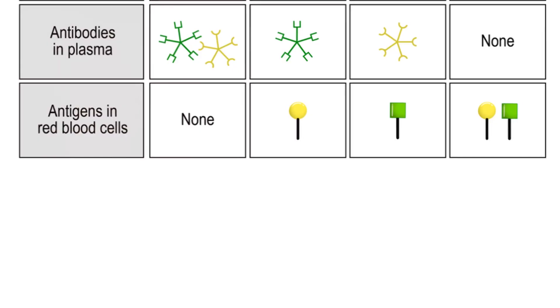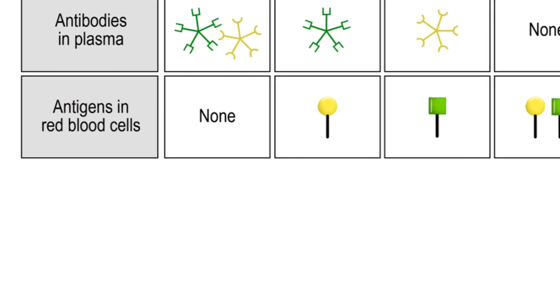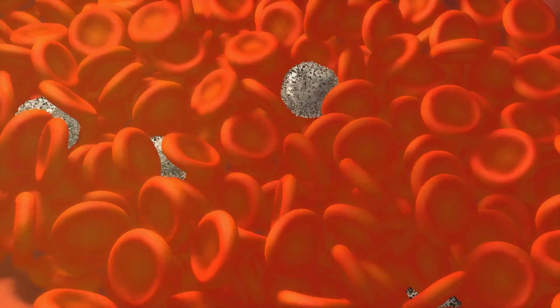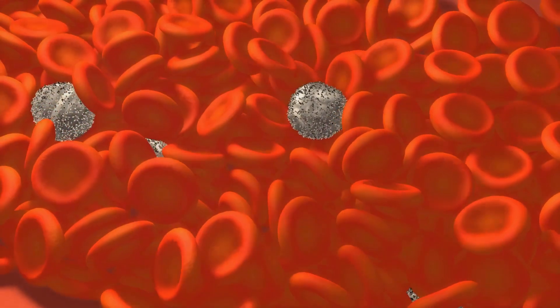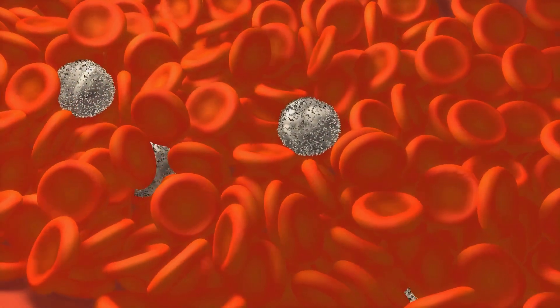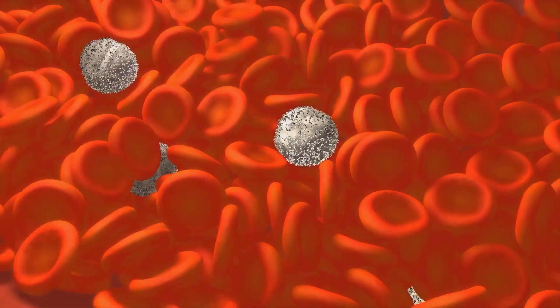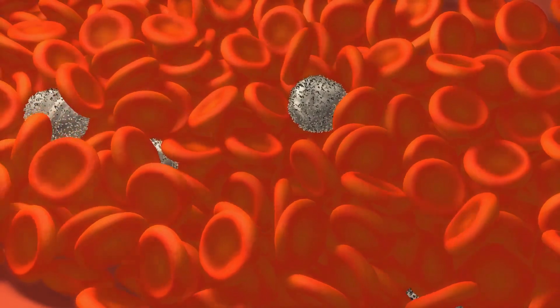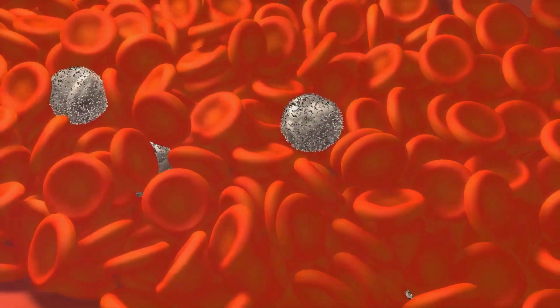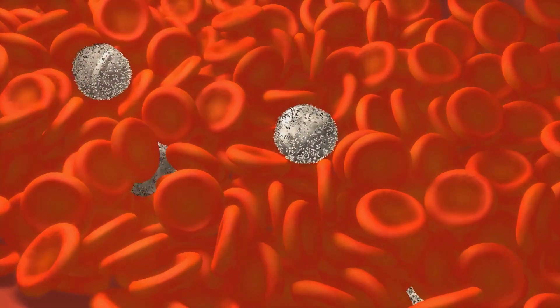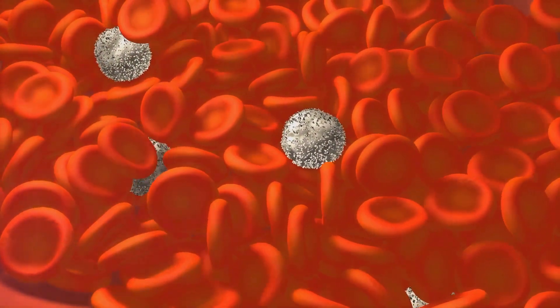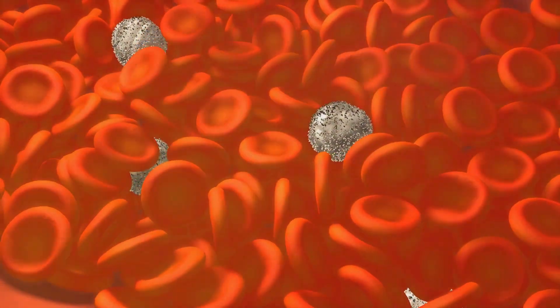Blood type A has A antigens on the red blood cells and anti-B antibodies in the plasma. Blood type B has B antigens on the red blood cells and anti-A antibodies in the plasma.